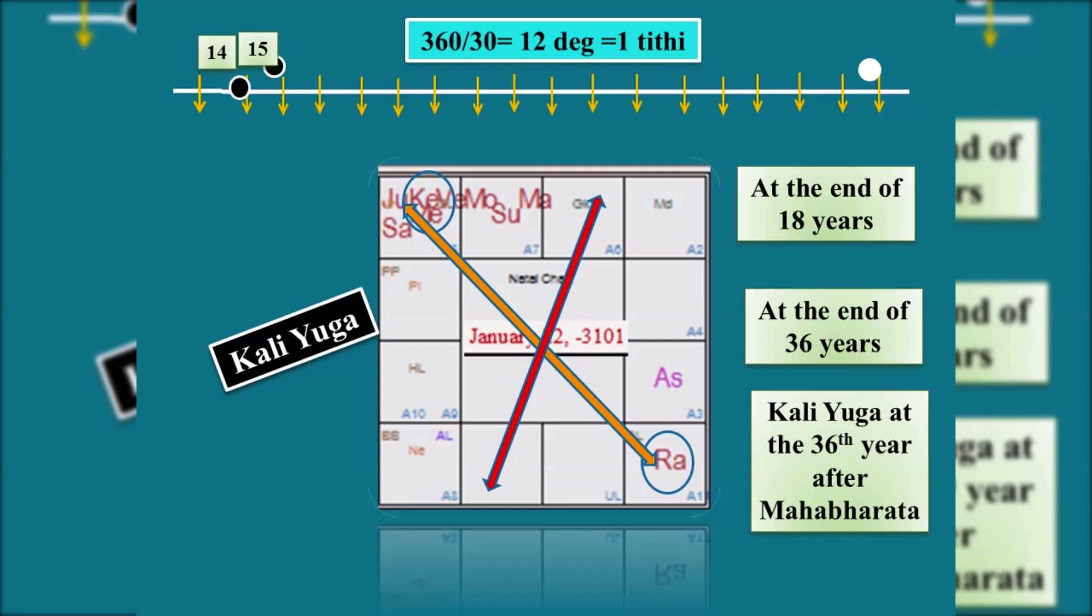What Vyasa had said was, he had seen the Amavasya happening on Chaturadashi. Possible. Even now it happens, starting from the 14th day itself. But it will be going up to the 15th day. Within the beginning of the 15th day, it will come into that. So on the 14th day, the Chaturadashi Amavasya can happen.